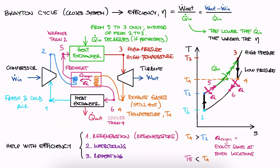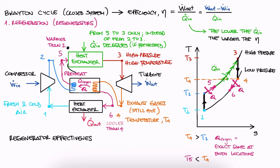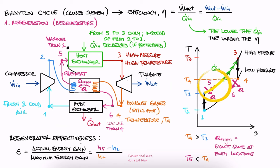Because of this concept, we care about what we call the regenerator effectiveness. This effectiveness is related to the heat or energy that the gases at 2 gain, and is therefore defined as the actual specific enthalpy change over the maximum possible specific enthalpy change. The actual change is from 2 to 5, or H5 minus H2, and the max would be from 2 to 4, or H4 minus H2, in the best case scenario.